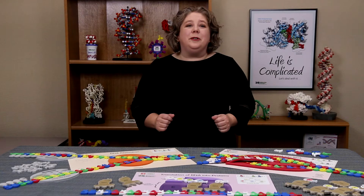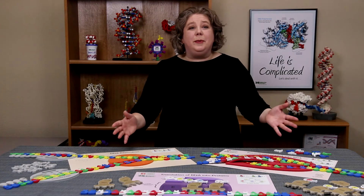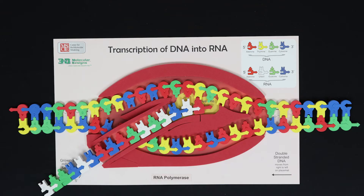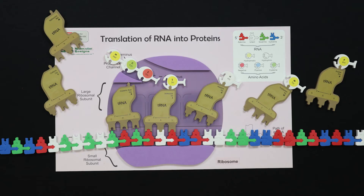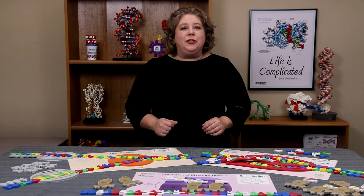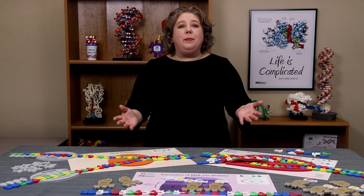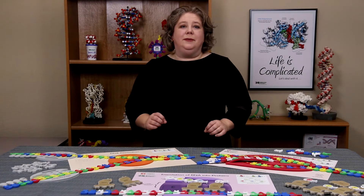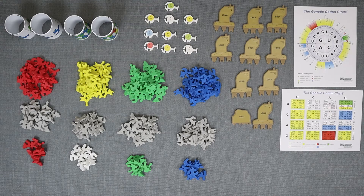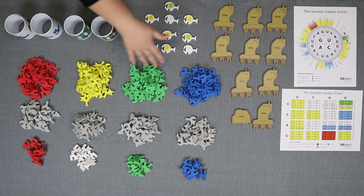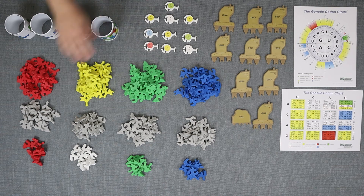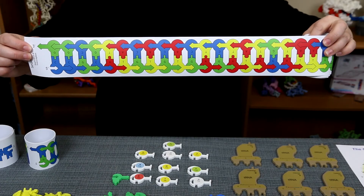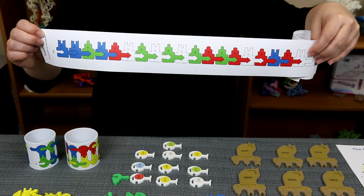One group set comes with all three placemaps, including replication, transcription, and translation. You get all the parts you need to run all the activities sequentially: 40 of each color-coded nucleotide, 24 of each gray nucleotide, and two DNA and two RNA sequence maps.